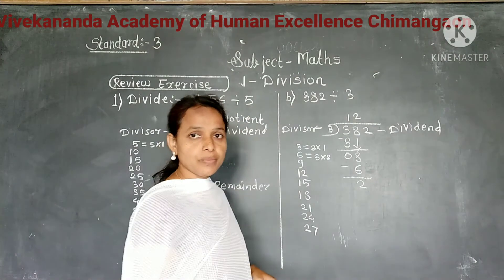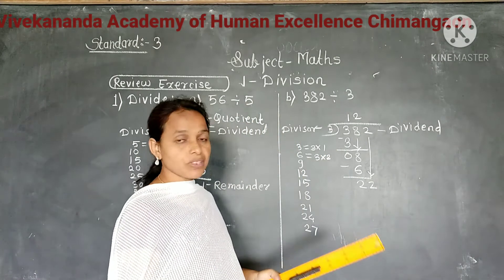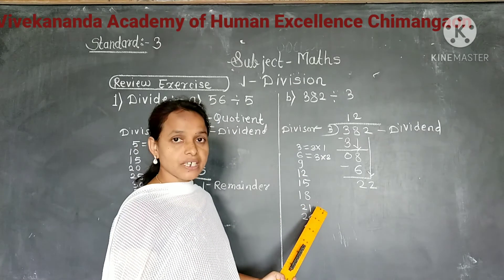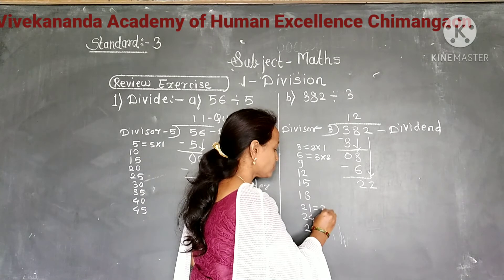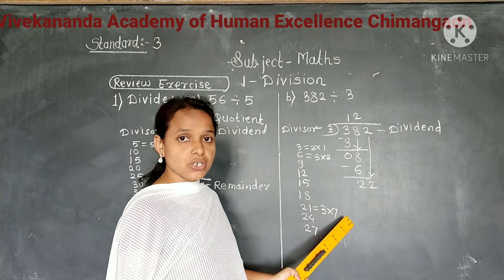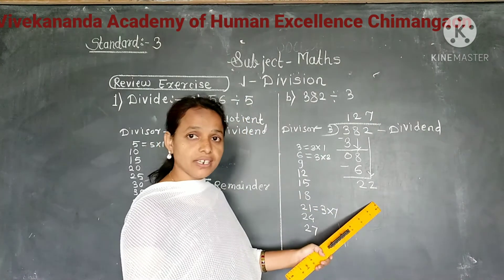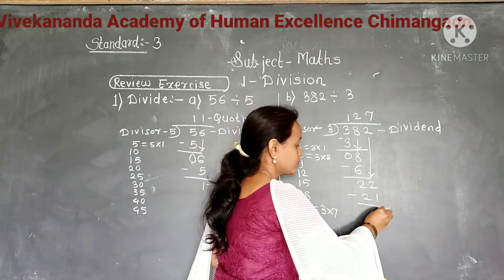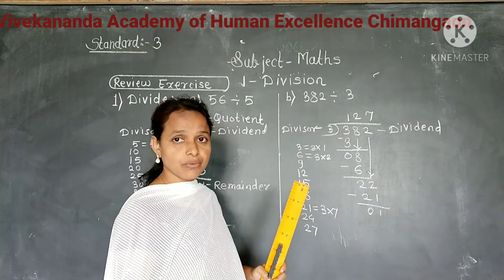Next digit 2, we bring down. Now we divide 22 by 3. But 22 is not in the multiplication table of 3. So less than 22 is 21, which comes in the seventh place of the multiplication table of 3. So we divide 22 by 3, it gives 7 as a quotient. Write 7 as a quotient in the ones place and write product 21 below 22. Subtract, it gives 1. So dividing 382 by 3 gives 127 as a quotient and 1 as a remainder.